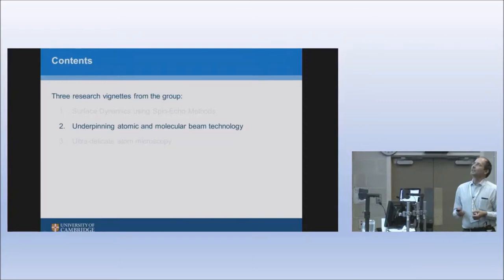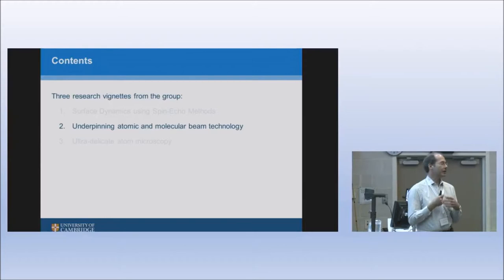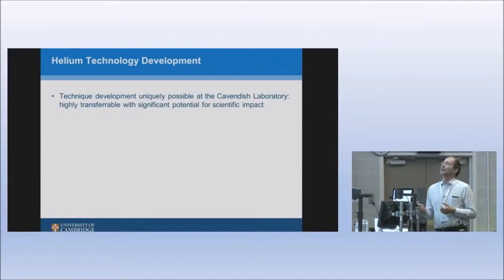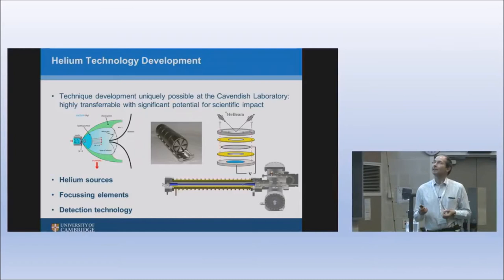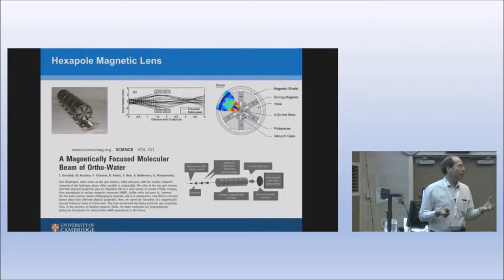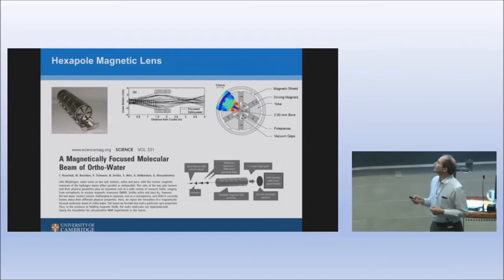The point is that in order to do all this, you have to develop a whole pile of technology. The output of this research is not just the results and the science and the links to the fundamental stuff, but the technology you produce. In order to do this, you need to work out helium sources, polarizers, detectors, and things like this, which then get exported to various other people who then produce lots of other work on things like polarizing water. So you can do NMR with very high signal efficiencies.